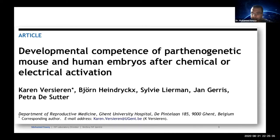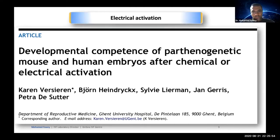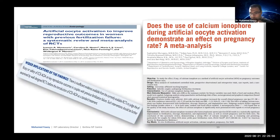Electrostimulation alters the activation potential of ion channels in the ooplasmic membrane; application of electrical pulses creates ionic channels to the oocyte, allowing calcium entry from the surrounding medium. Chemical activation is the most commonly used and most efficient oocyte activation approach in practice.